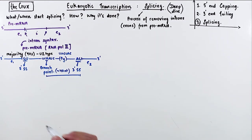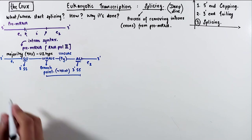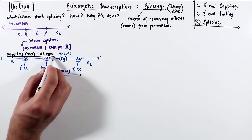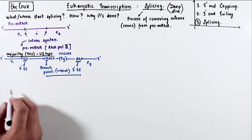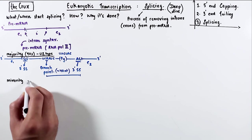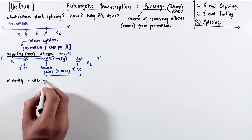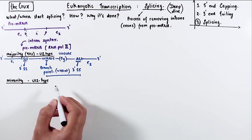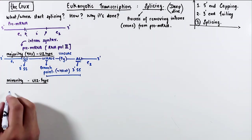We call these introns U2-type introns, and we will soon see why they are called this way. The remaining subset of pre-mRNA, the leftover 10%, usually falls into a minority case, which have the U12-type introns.